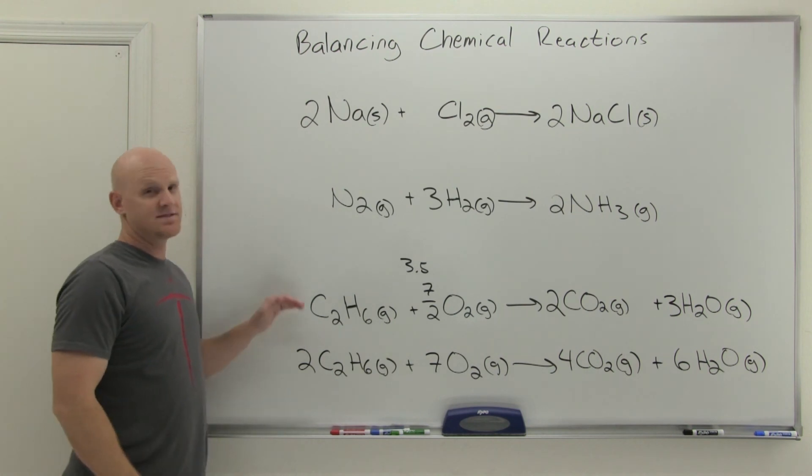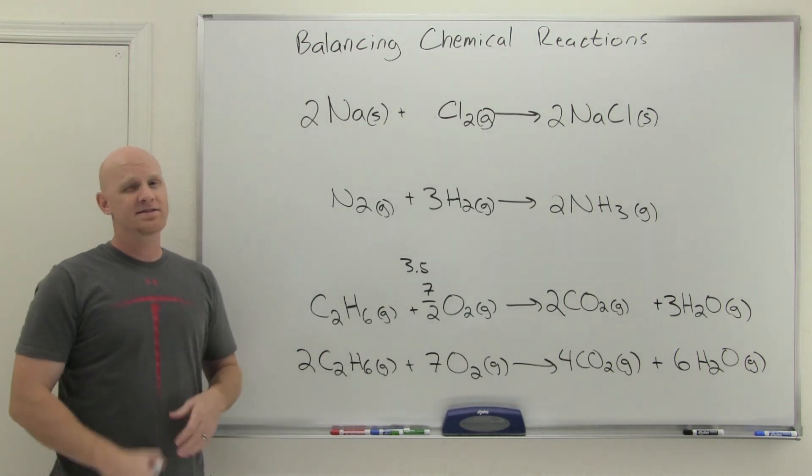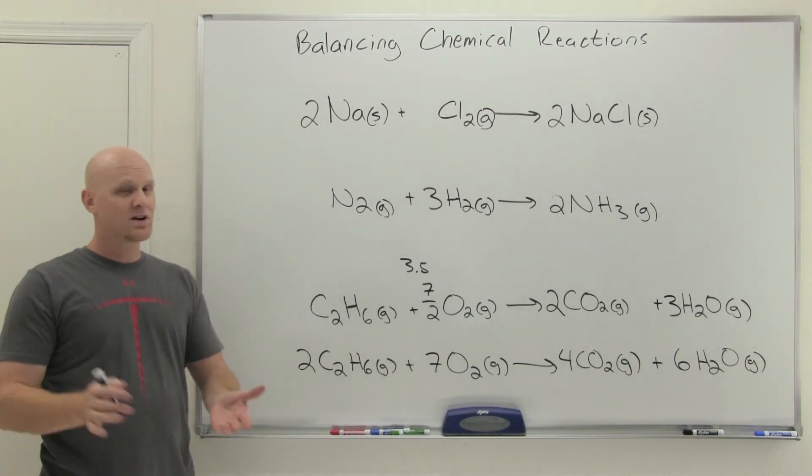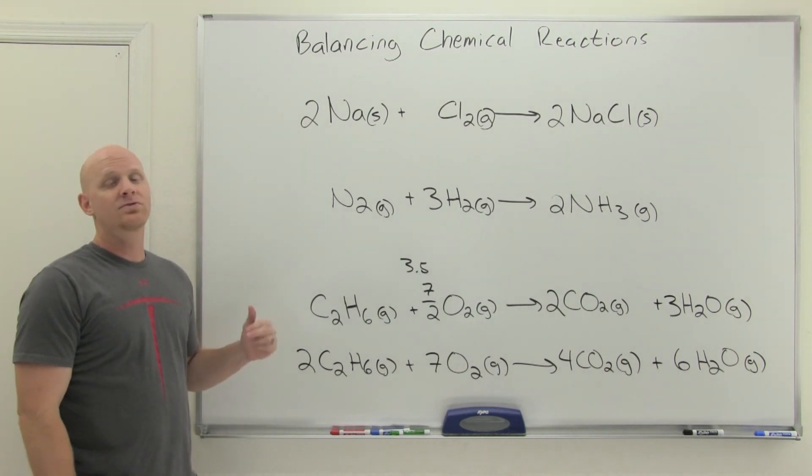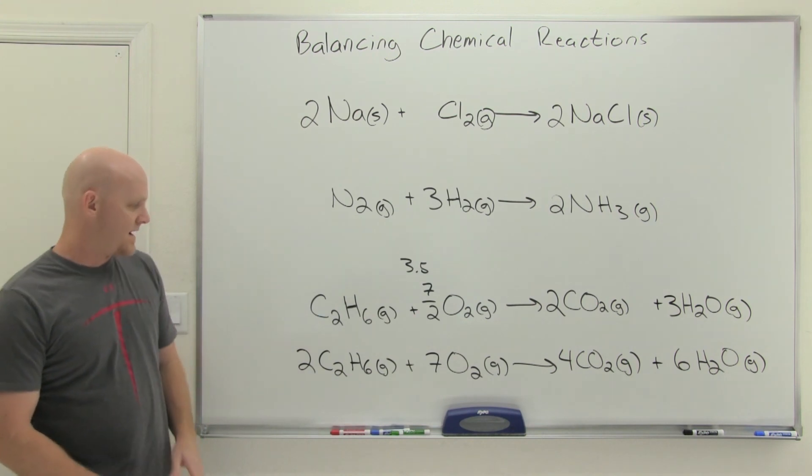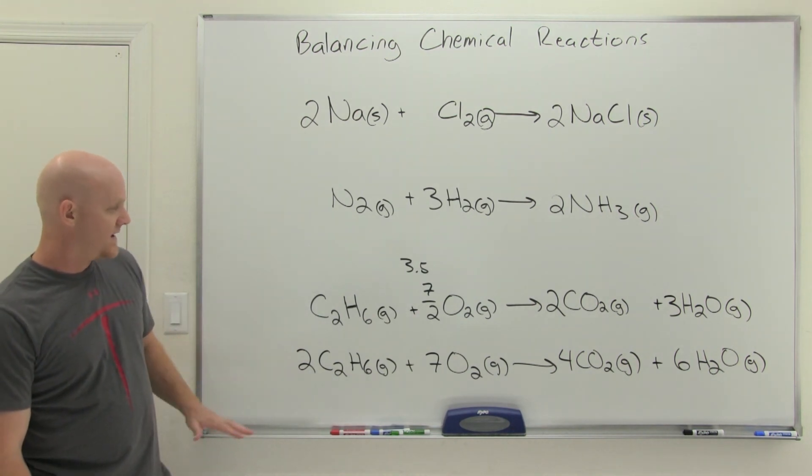And so technically, either one of these is technically correct. It all depends on how they ask the question. For a high school chemistry class, or even a college chemistry class, the most common way they're going to ask it though, is to ask for all the coefficients to be whole numbers. As is the case for the bottom one here. And again, it doesn't matter which element you pick, they're going to balance out.